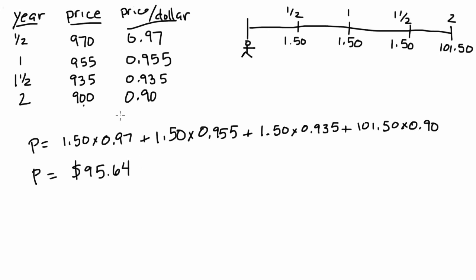What's really nice about this example is that we are pricing this bond as a collection of individual cash flows. We receive four individual cash flows, and we know the price that we as investors are willing to pay for each dollar received at different periods of time. For that one-year cash flow, for every dollar we receive in one year, we're willing to pay $0.955.